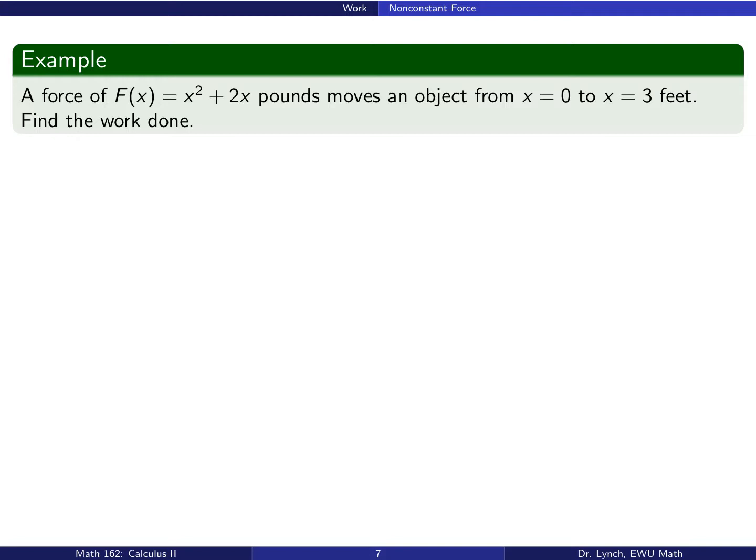Here's an example. Suppose that we use a force of x squared plus 2x pounds to move an object from x equals 0 to x equals 3 feet. Find the work done. So we have an expression for force. We have the x limits 0 and 3. And the work accordingly is exactly a definite integral. In this case, that work is the integral from 0 to 3 of x squared plus 2x dx. So 1 third x cubed plus x squared evaluated between 0 and 3. Top limit subtract off the bottom limit. Obtain 18 foot-pounds.